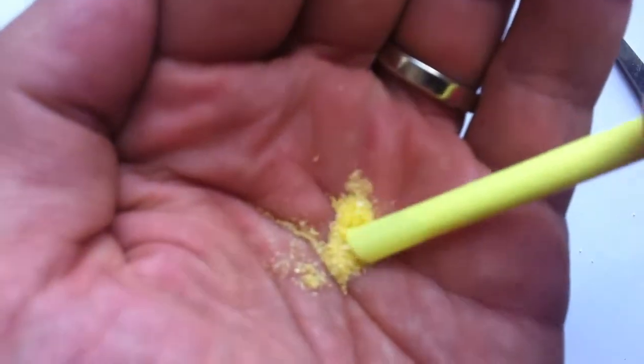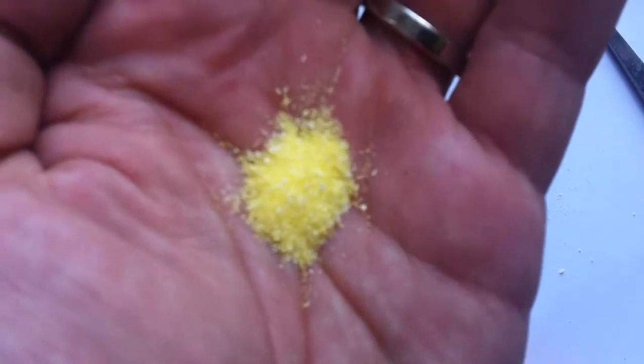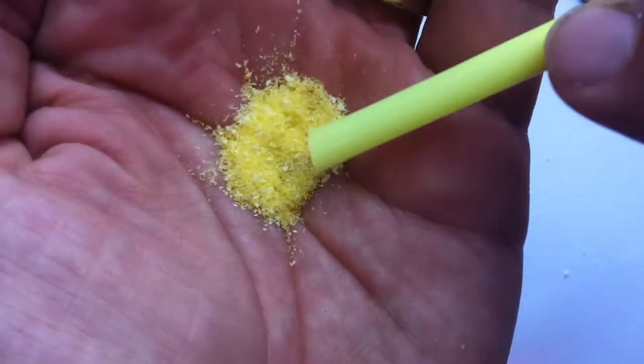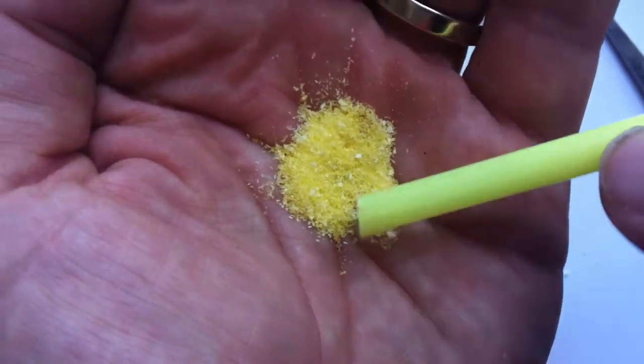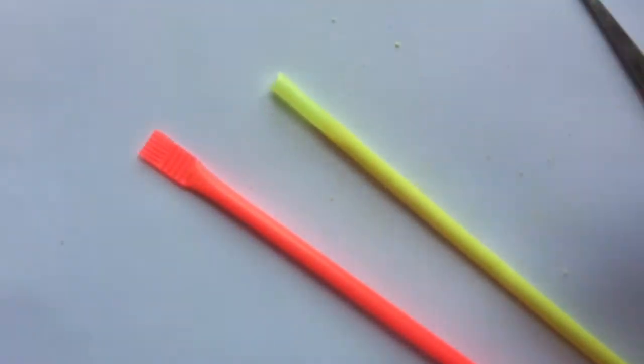All right. So, let's see what we got here. I like that both the straw and the powder are neon. This is clearly our yellow neon. That's a nice color. All right. Powdered Sugar. Let's give it a try.